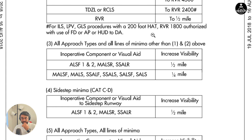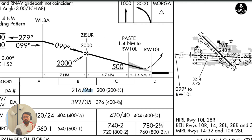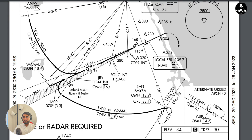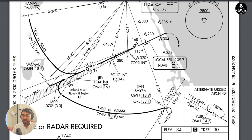You can look at tables 4 and 5 at your own convenience, but that is how you use the inoperative components table. In my course video I'll make the approach plates available under the video itself so you can follow along and understand how to use the inoperative components table better.